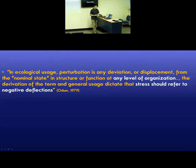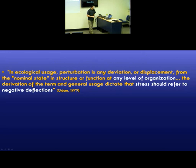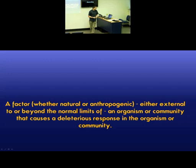This is a key quote from Odom in 1979, where he says that in an ecological context, perturbation or stress is any deviation or displacement from the nominal state in structure or function at any level of organization, whether that's the individual or the community. General usage dictates that stress should refer to a negative deflection. I've compiled definitions into a working definition: a stressor is a factor — whether natural or anthropogenic in origin — either external to or beyond the normal limits of an organism or community, that causes a deleterious response.